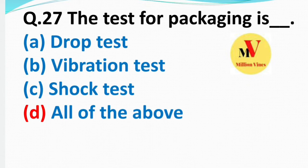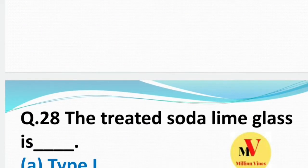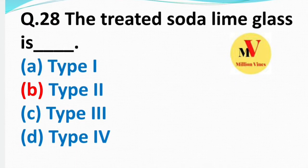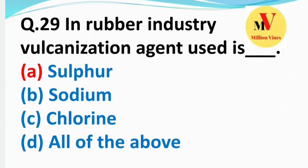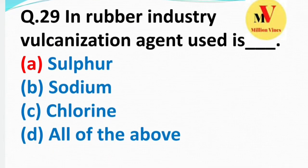Next: The treated soda lime glass is of which type? Right answer is B — Type 2. Next question: In the rubber industry, vulcanizing agent used is — right answer A — sulfur.